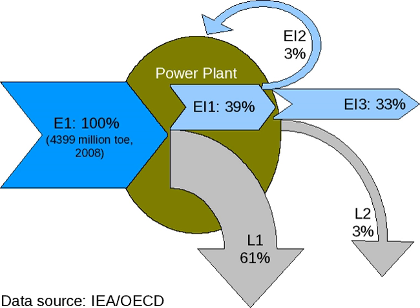Even though the definition includes the notion of usefulness, efficiency is considered a technical or physical term. Goal- or mission-oriented terms include effectiveness and efficacy. Generally, energy conversion efficiency is a dimensionless number between 0 and 1.0, or 0% to 100%. Efficiencies may not exceed 100%, e.g., for a perpetual motion machine.